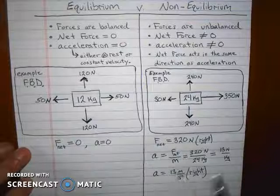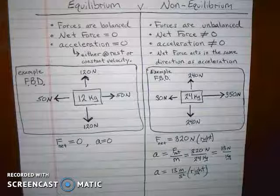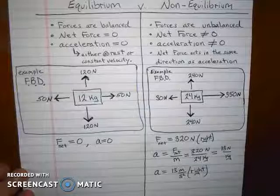Which just simply says acceleration is net force over mass. 320 newtons over 24 kilograms gives you 13 newtons per kilogram rounded to two sig figs, which is 13 meters per second squared moving to the right, if you look at your SI units.